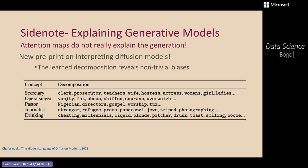These decompositions also reveal biases. Obvious gender biases: 'secretary' is represented by wife, hostess, actress, women, girl, ladies. But also less detectable biases only visible when you let the model choose its denoising words — for example, the word 'Jews' appearing in a disturbing context, and 'drinking' being represented by cheating, millennials, blonde, drunk, booze. Explaining models can surface disturbing biases not observable just by looking at generated images — which is important because generative models are now almost everywhere in our daily lives.